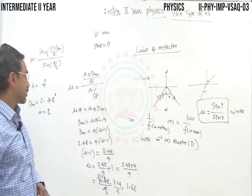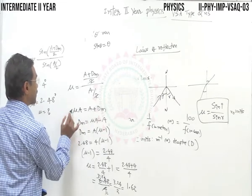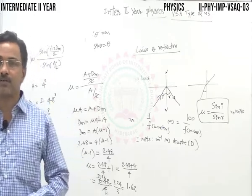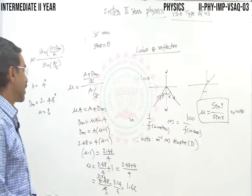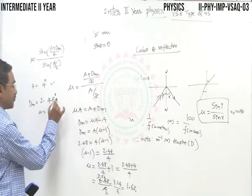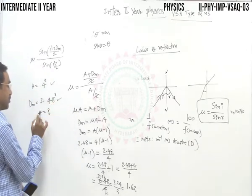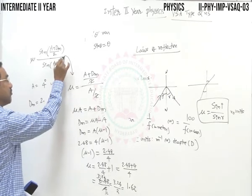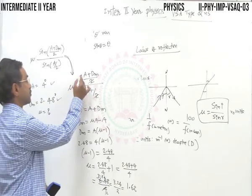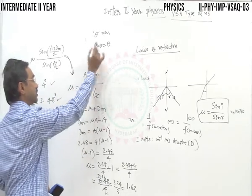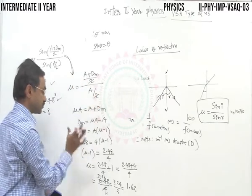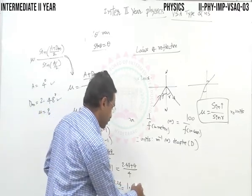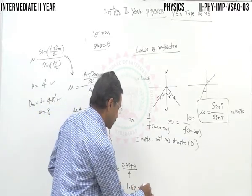For a small-angled prism, A is given, angle of minimum deviation is given; use the formula d_m = (μ − 1)A. Applying sin θ ≈ θ, the 2s cancel. Substitute and simplify to get the refractive index = 1.62, which has no units — it is simply a number.